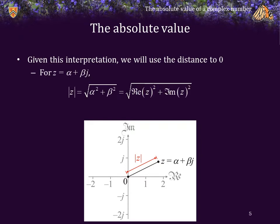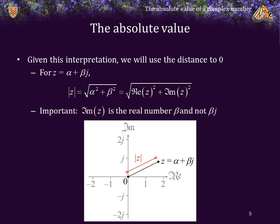For example, if z is equal to alpha plus beta j, then the absolute value of z is the square root of alpha squared plus beta squared, or the square root of the sum of the squares of the components. It's very important to remember that the imaginary part of z is the real number beta and not beta j.